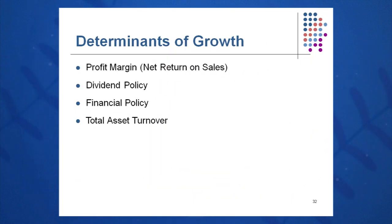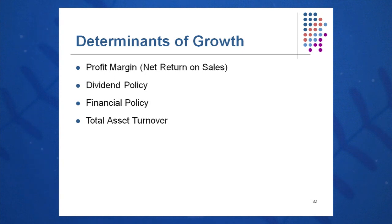The determinants of growth include: profit margin and how much of that profit is retained versus paid out as dividends. Dividend policy has a big impact — many high-growth NASDAQ companies plow all net income back in rather than paying dividends, which allows faster growth. Financial policy — how much debt versus equity is taken on — also has a big impact, as does total asset turnover. These are several key components of ROE, so ROE obviously has a significant impact on growth.